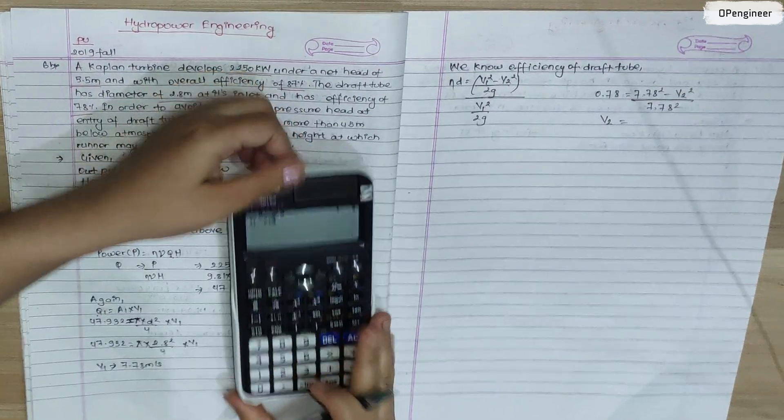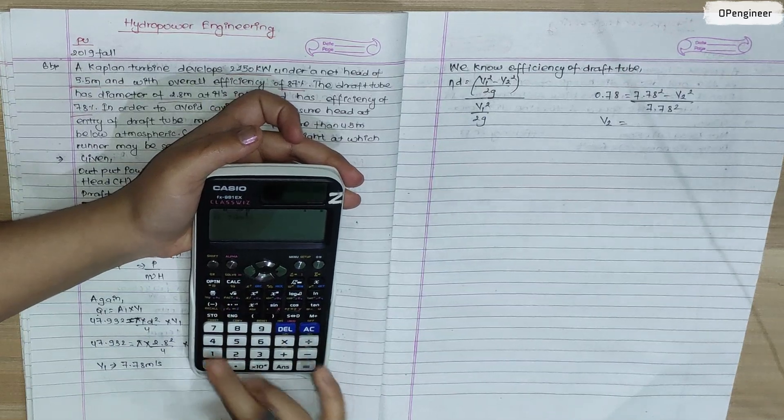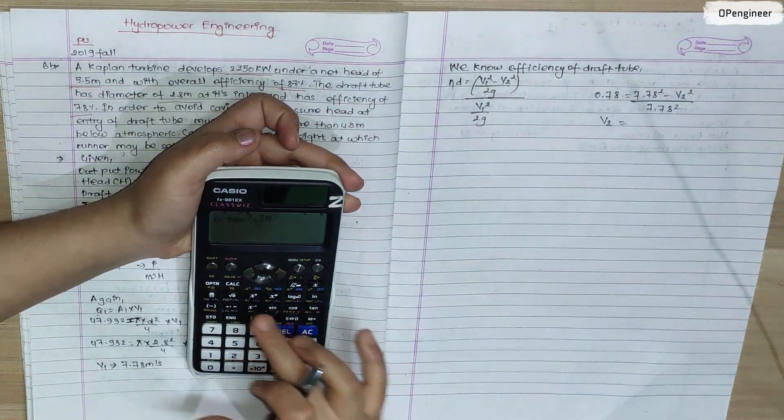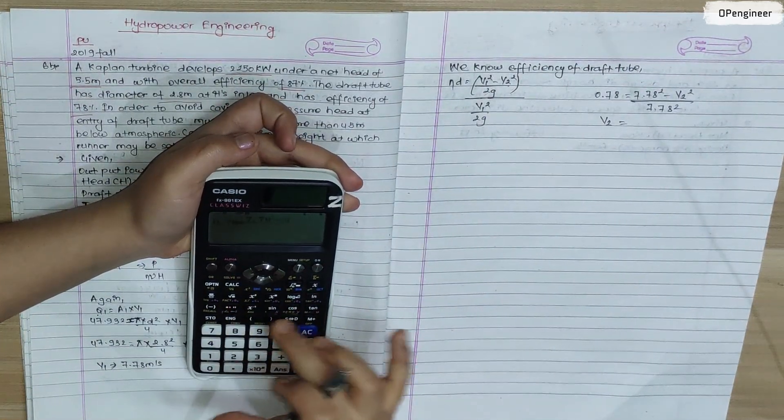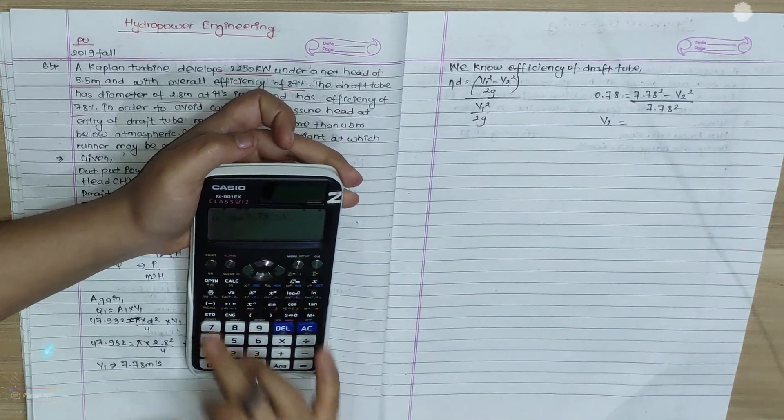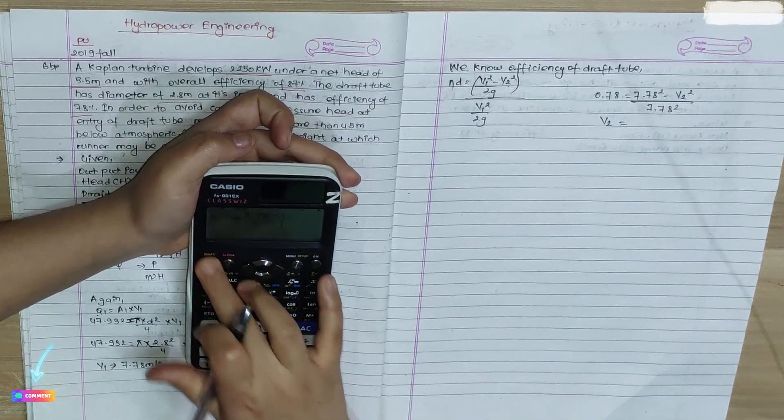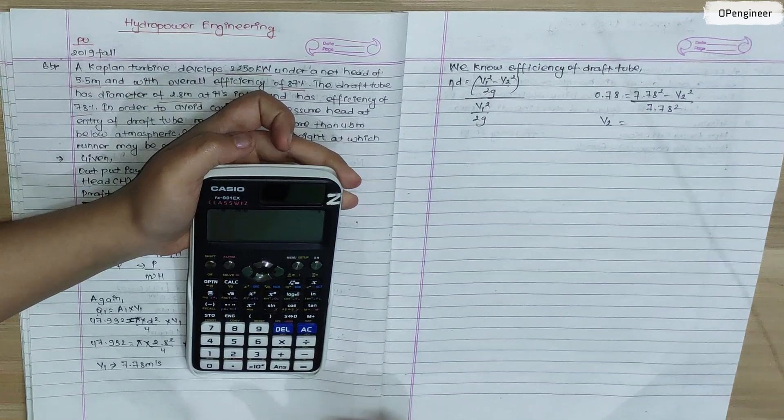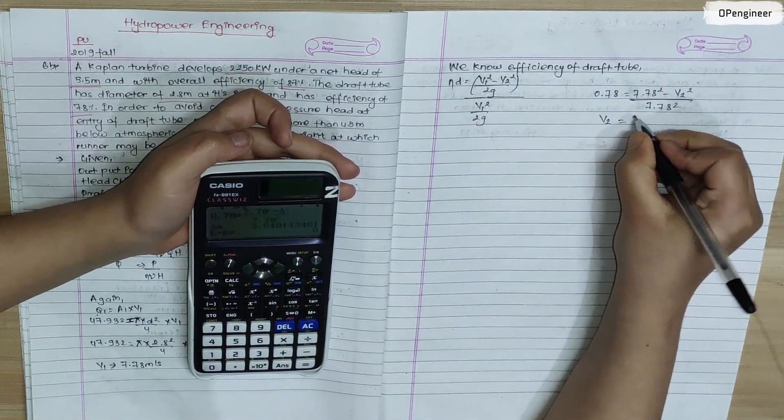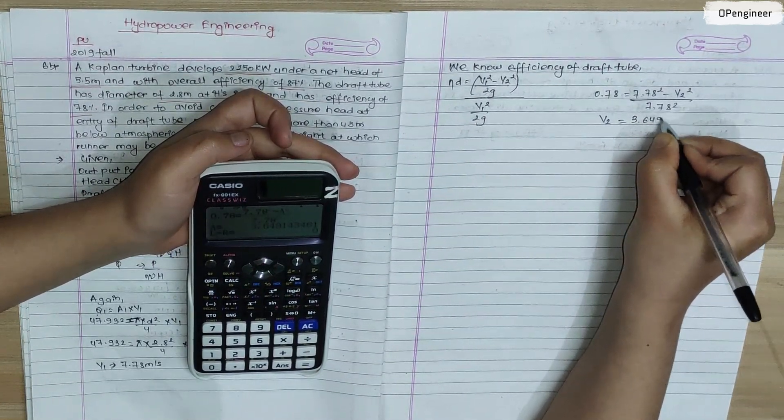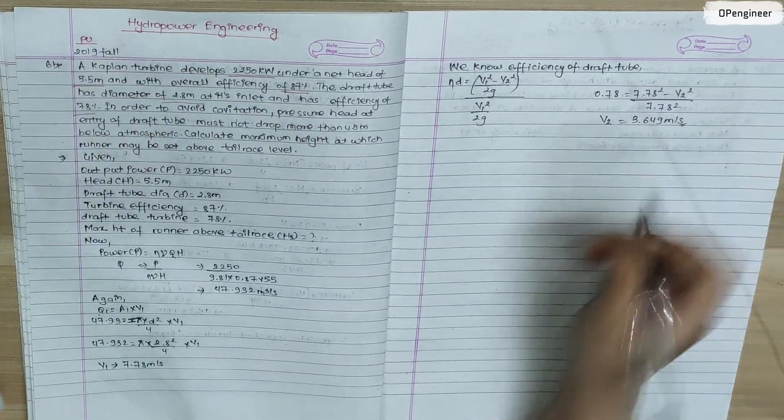After calculation, V2 equals 3.649 meter per second. Now we calculate maximum height of runner above tailrace using Bernoulli's equation.